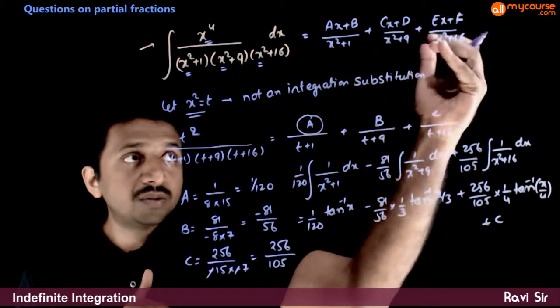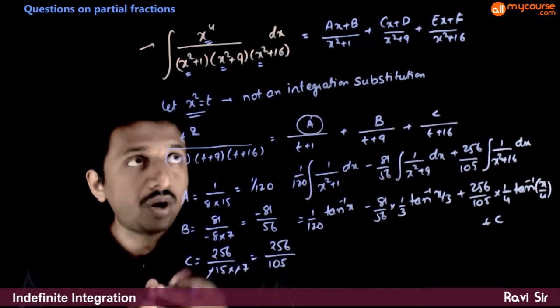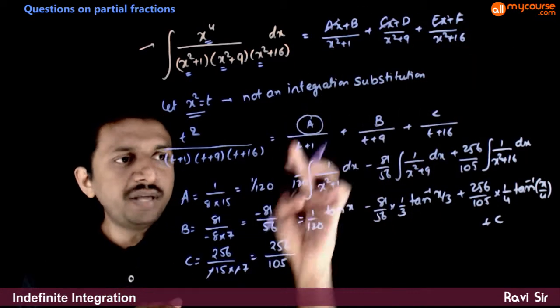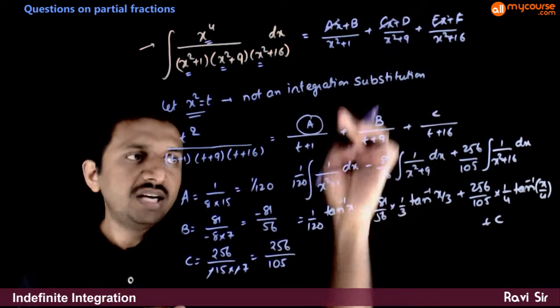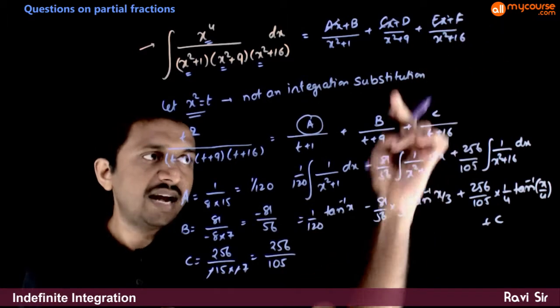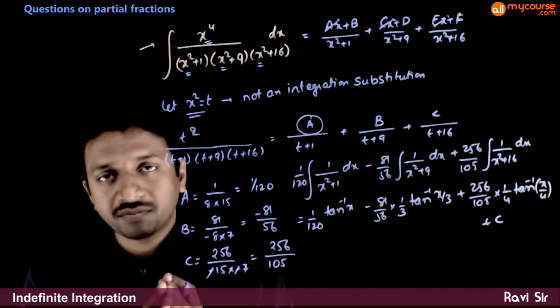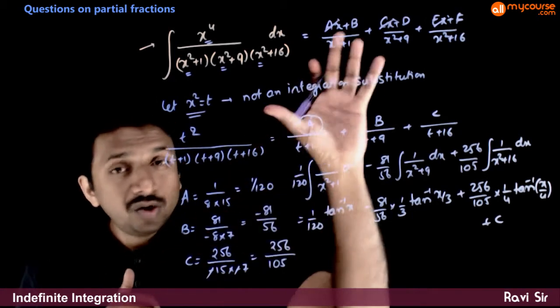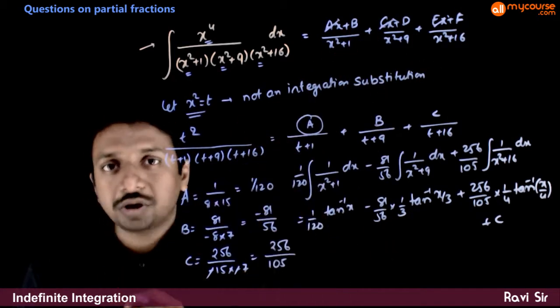Even if you do it in this way, you get the answer theoretically. What you get is you get a, c and e as zeros, b as 1 by 120, d as minus 81 by 56 and f as 256 by 105. That is the answer you are going to get. But you don't need to do so much working, you can use a shortcut.